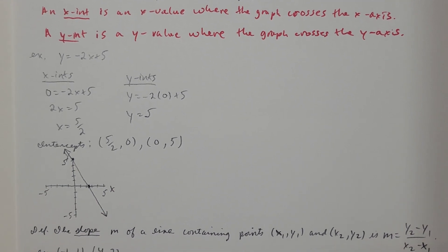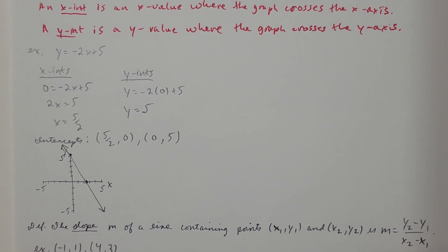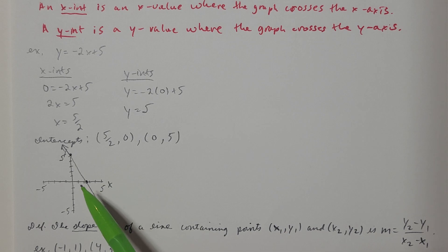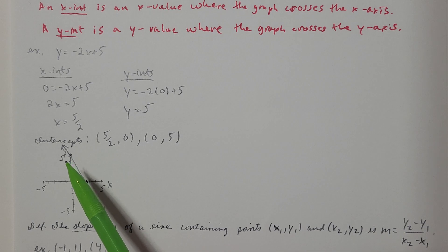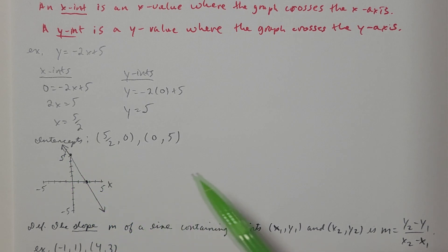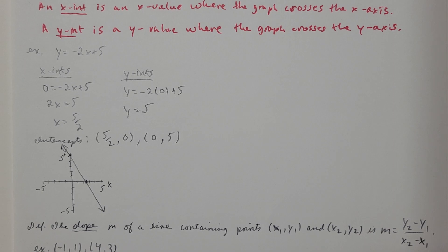When we plot these points — here's (2.5, 0) and here's (0, 5) on the graph — we have those two points, so we draw a line through them. That would be the graph of y equals negative 2x plus 5.